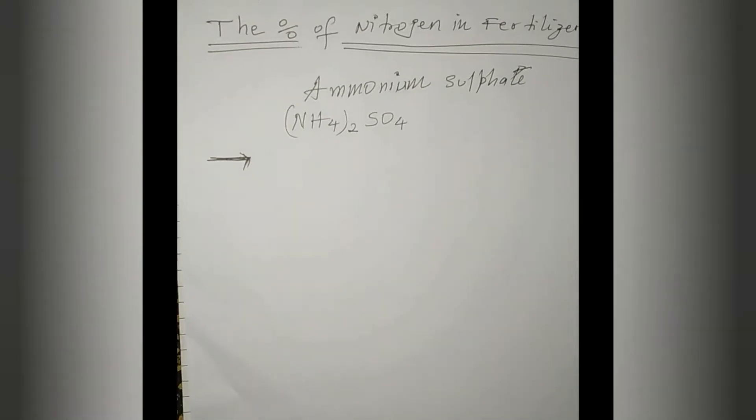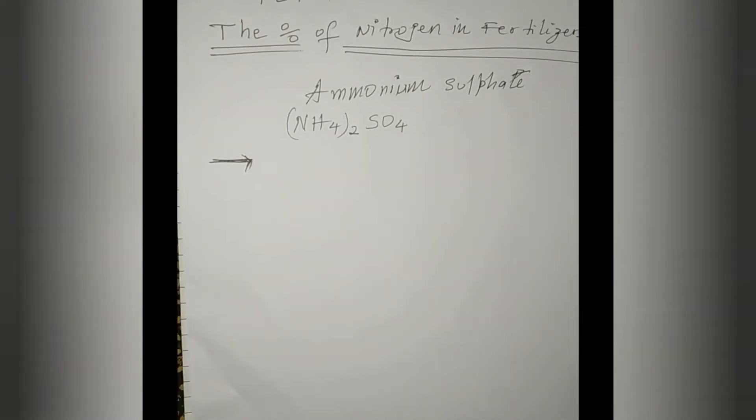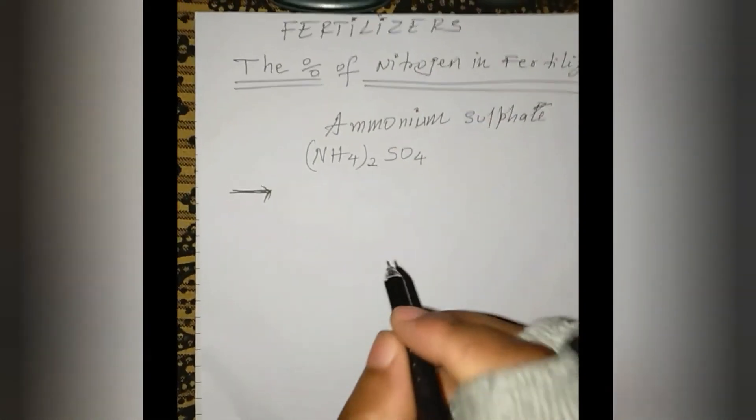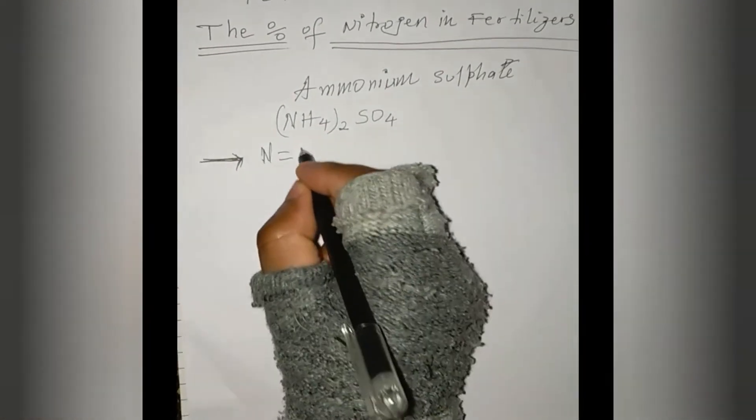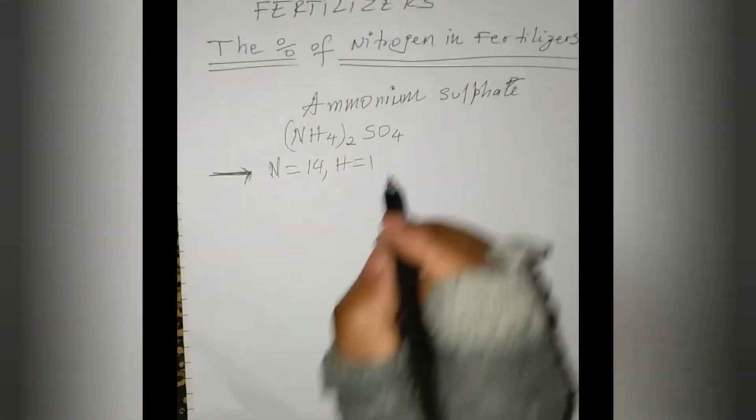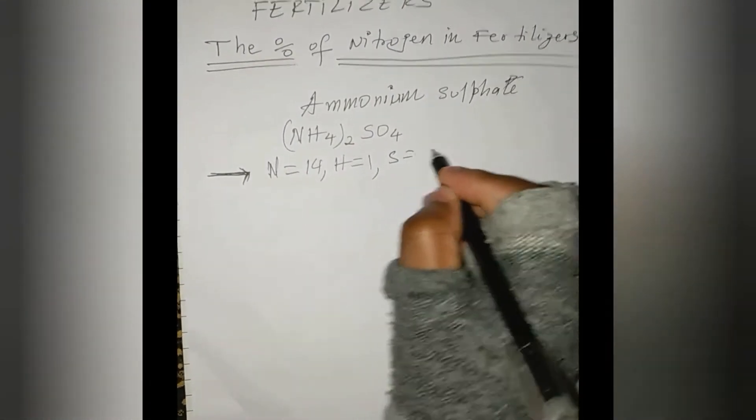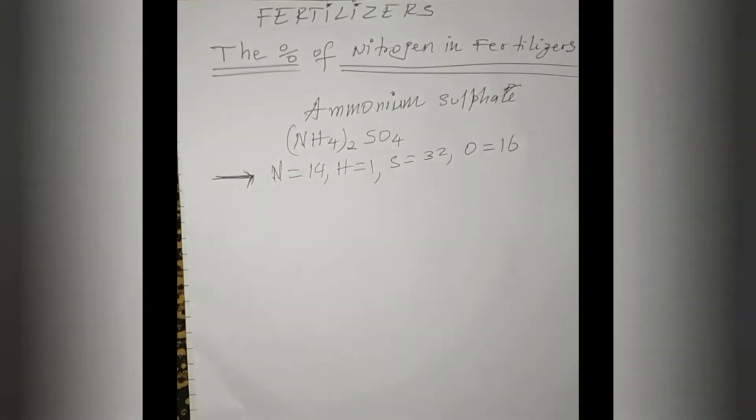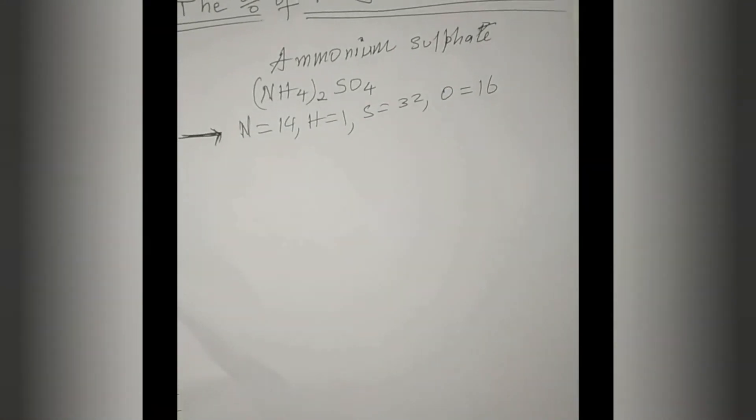First you have to work out the atomic mass of the compound, and before that we have to calculate the atomic mass of the individual elements. Let's start with nitrogen: 14, hydrogen is 1, sulfur is 32, and oxygen is 16.